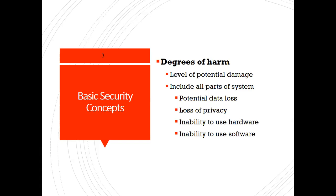Threats may be of different levels and there may be different degrees of harm that can damage the system. Potential damages include data loss, privacy loss, hardware loss, inability to use hardware or software. Cyber harm is the damaging consequence resulting from cyber events, which can originate from malicious, accidental, or natural phenomena manifesting within or outside of the internet.